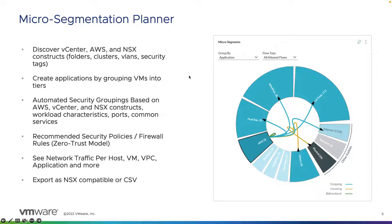With the micro-segmentation planner, we can also discover vCenter, AWS, and NSX constructs. We can look at things like folders, clusters, VLANs, security tags. We can group applications by VMs within the planner, look at recommended security policies or firewall rules to implement a zero-trust model, and see network traffic per host, per VM, per VPC, along with applications and much more.